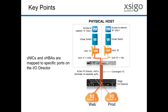A key point is that virtual NICs and virtual HBAs are mapped to specific ports on the I/O director. When you create a virtual NIC, you map it to a port on the I/O director. If you create another virtual NIC and want these two things isolated, you map it to a different port. That mapping determines the isolation of the two environments. The only way these two VNICs could talk to each other is if you map them to the same port and configure them on the same VLAN. Without that, those two VNICs cannot talk to each other — they behave exactly as if they were on physically separate networks.